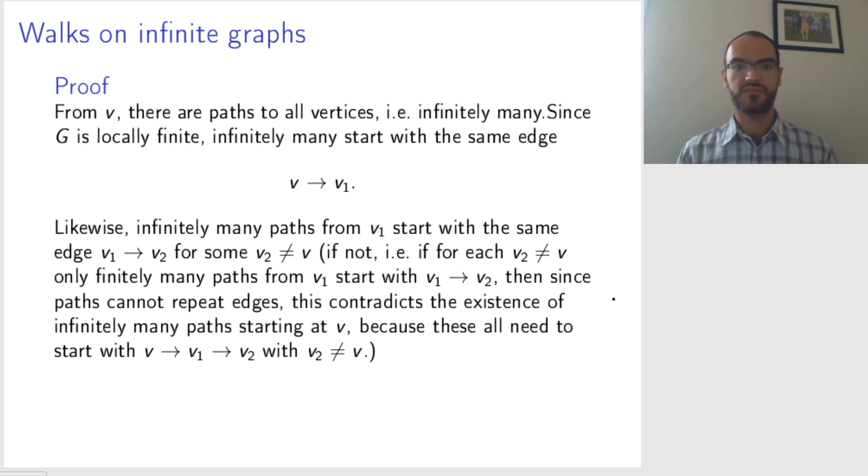If that were not possible, so if for each vertex different from the initial vertex, there are only finitely many paths from v1 that start with this vertex, then since paths cannot repeat edges, you cannot have infinitely many paths starting at v.